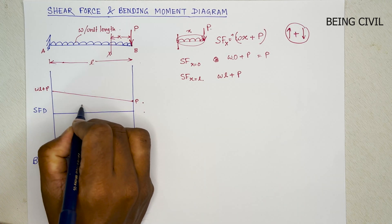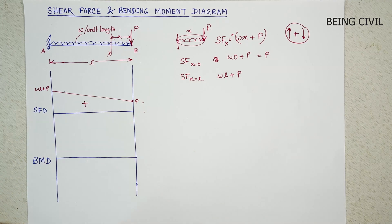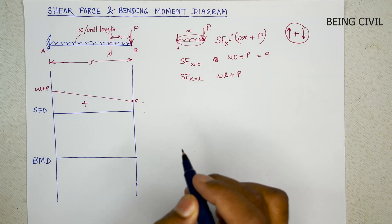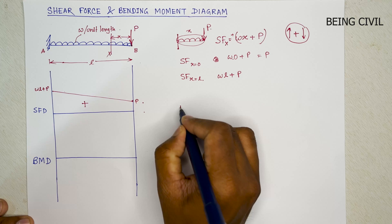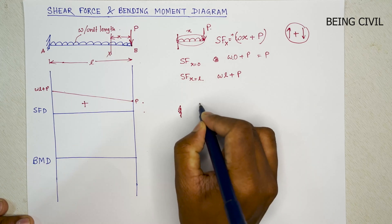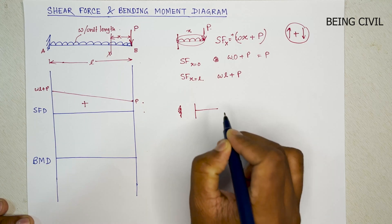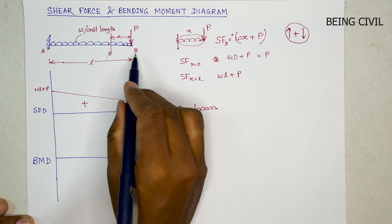So this is the shear force diagram and it is positive. Now we will draw the bending moment. So again we will take the section right side of X.